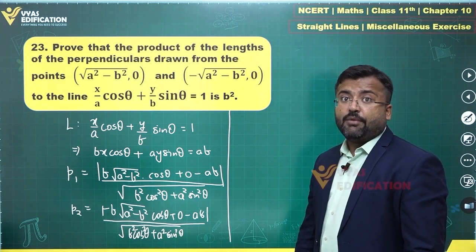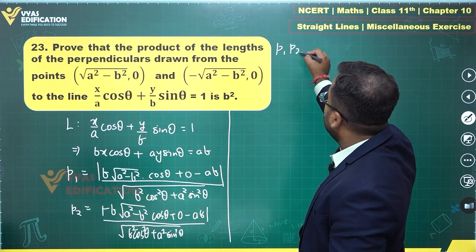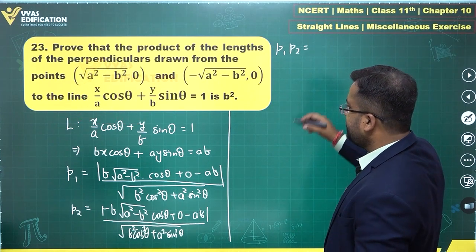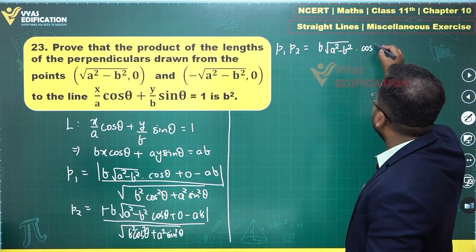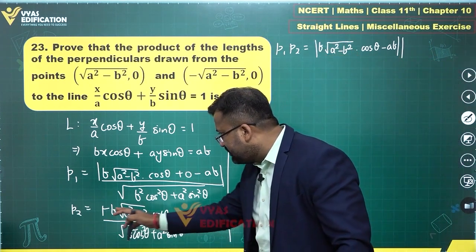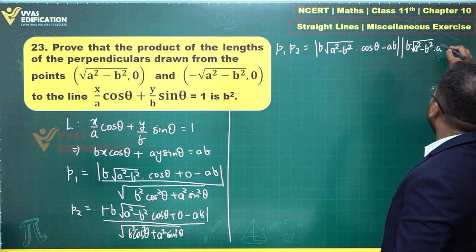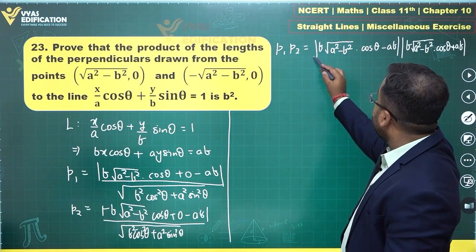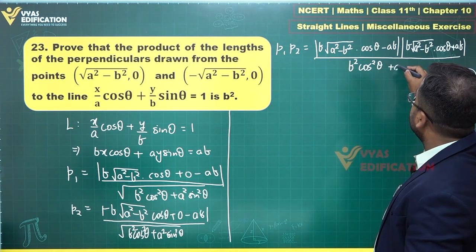Now we look at the product P1·P2. In the numerator we have modulus of the first expression times modulus of the second. The two expressions inside the moduli are (b·√(a²−b²)·cosθ − ab) and (b·√(a²−b²)·cosθ + ab) — this is an (A−B)(A+B) form. Multiplying gives A²−B², so the numerator becomes the modulus of b²(a²−b²)cos²θ − a²b².